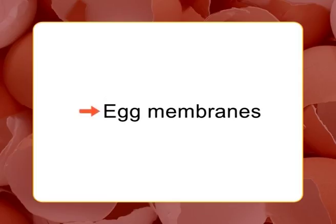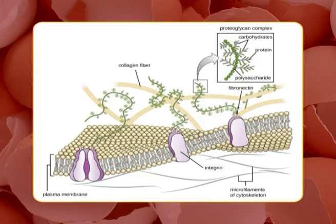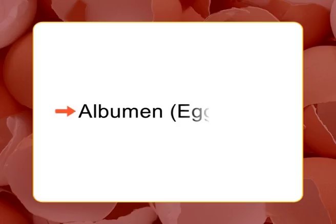The second component is egg membranes. The inside of the shell is lined with two closely adhering membranes, usually 48 and 22 micrometers thick respectively. These are made up of an interwoven network of protein-polysaccharide fibers. One membrane is attached to the shell while the other moves within the egg contents during separation. The third component is albumin, commonly known as egg white.